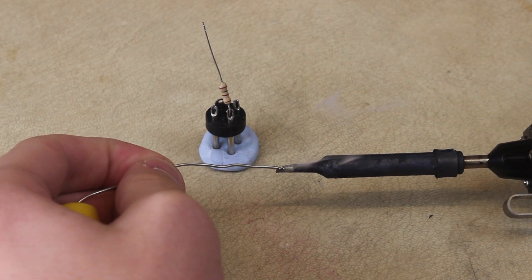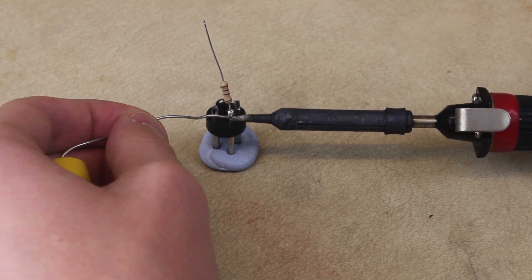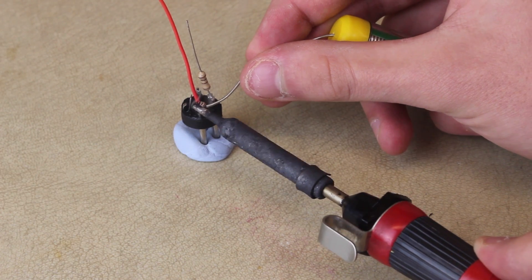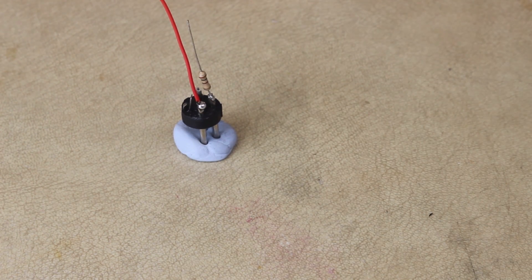Now it's time to solder it all together. First we solder on the resistor to pin 3 and a small length of wire to pin 2. Make sure you use something to hold down the connector as you solder, it'll make your life a lot easier. Though I suggest you use some electrical tape rather than using Blu-Tac.